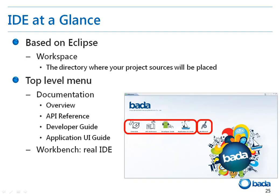After the installation, when you launch the Bada IDE for the first time, a window with five buttons appears. The Overview, API Reference, Developer Guide, and Application UI Guide buttons are to view Bada development documents, and the last button, Workbench, is the button to enter the IDE.